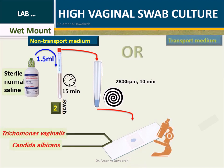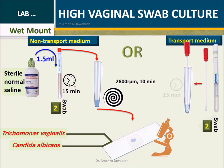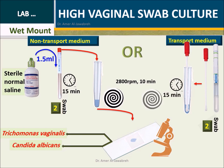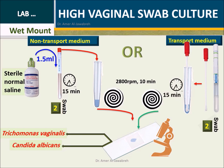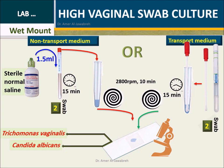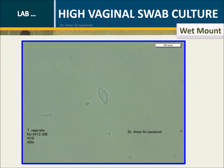Wet mount (transport medium): Prepare a tube with 1.5 ml of sterile normal saline. Place the swab in the tube and incubate for 15 minutes. Centrifuge at 2800 RPM for 10 minutes. Examine the sediment for Trichomonas and yeast. The wet mount image shows a Trichomonas vaginalis trophozoite.